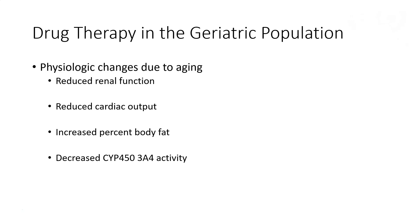Just as we saw physiologic changes in the early stages of life that affect drug therapy, we have the same considerations in the geriatric population. As we age, renal function declines, so drugs eliminated by the kidney would definitely require a dose adjustment. There's also a reduction in cardiac output, meaning blood flow is reduced to eliminating organs such as the liver and kidney. Body fat increases as we age, so in an elderly patient, drugs distributed into body fat will have a higher volume of distribution compared to an adult. Finally, CYP-P450-3A4 activity has been shown to decrease in the elderly population, and since 50% of drugs are metabolized by 3A4, this is definitely an important consideration.